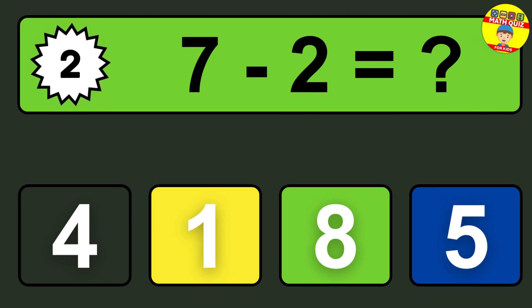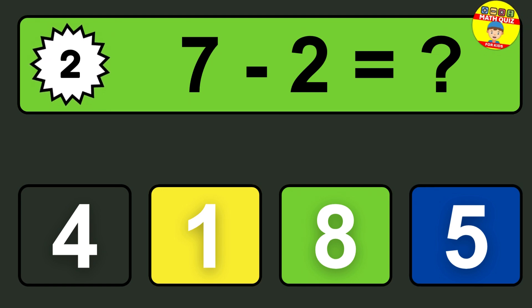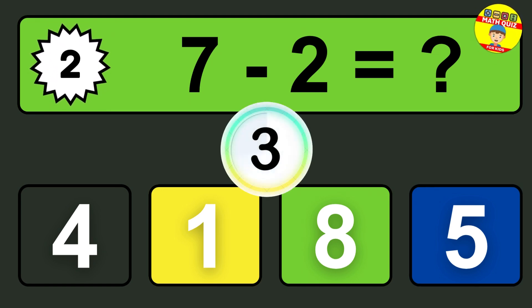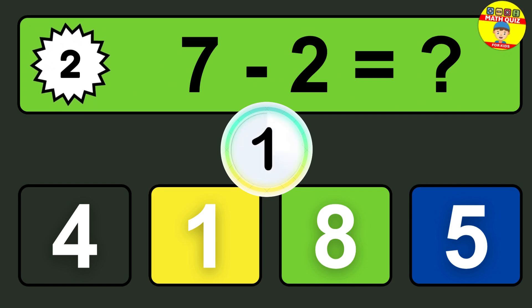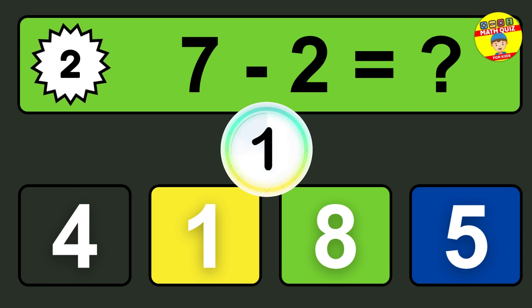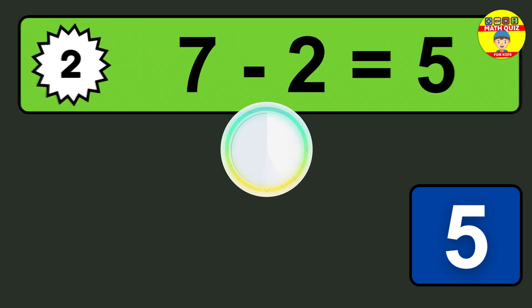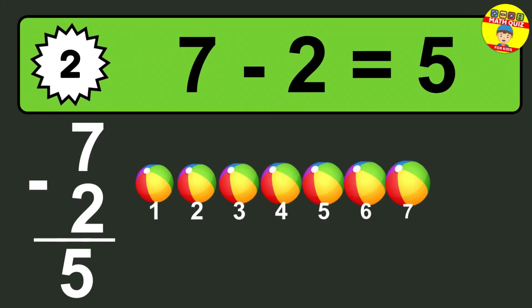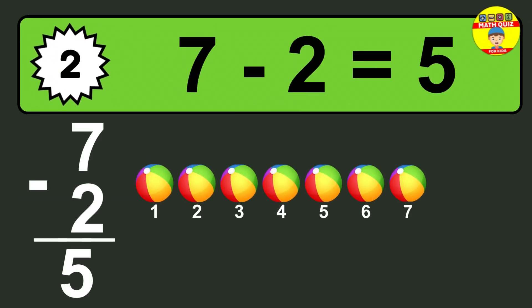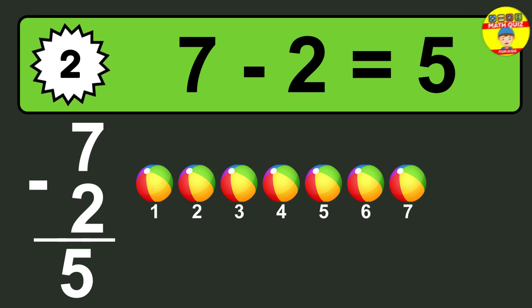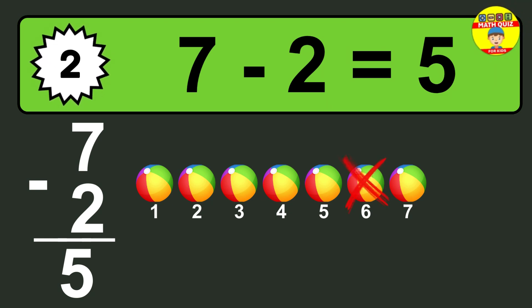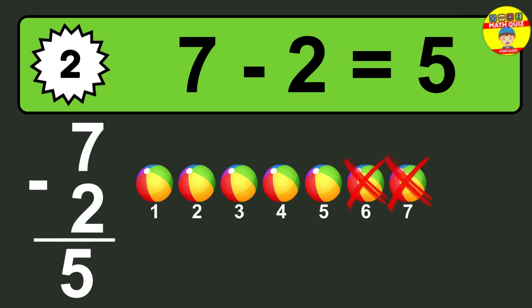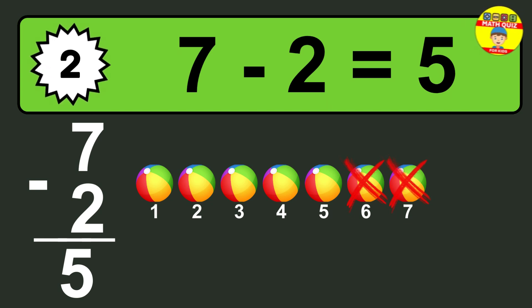Question two: seven minus two equals what? So the answer is seven minus two is five. Let's count it. One, two, three, four, five.